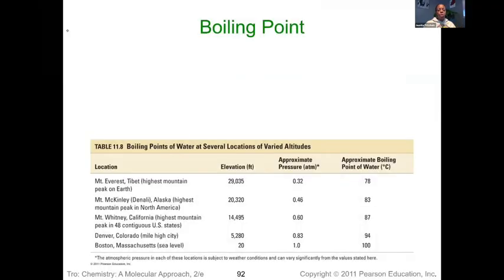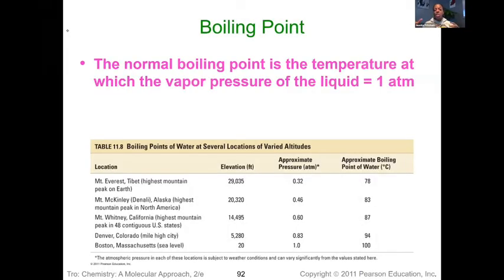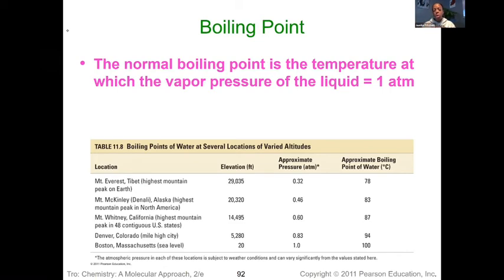If you've ever traveled or cooked in different places, you know that the boiling point can shift based on atmospheric pressure. At sea level, water boils at 100 degrees Celsius. But if we went somewhere like Mount Everest — very high in altitude with a definite decrease in atmospheric pressure — the boiling point also decreases. And if we were somewhere below sea level, like New Orleans, the boiling point should increase a bit because that external pressure is greater.